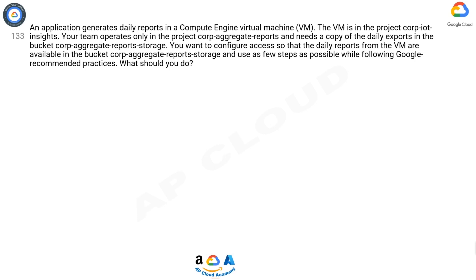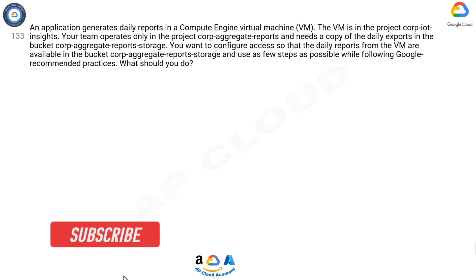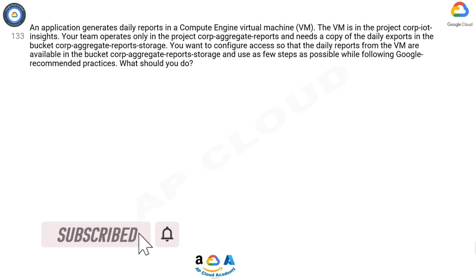Question 133. An application generates daily reports in a Compute Engine virtual machine (VM). The VM is in the project Corp IoT Insights. Your team operates only in the project Corp Aggregate Reports and needs a copy of the daily exports in the bucket Corp Aggregate Report Storage. You want to configure access so that the daily reports from the VM are available in the bucket Corp Aggregate Report Storage, using as few steps as possible while following Google recommended practices. What should you do?